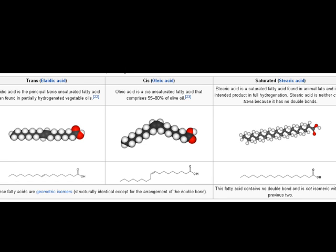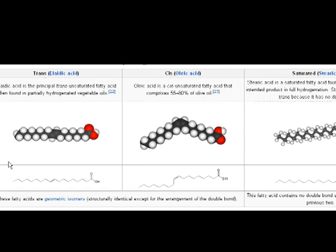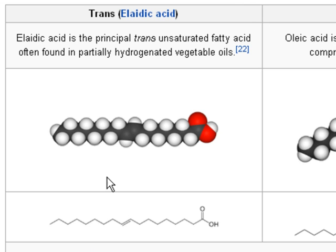Here are three general examples of fatty acids which can be used to make fats, such as a triglyceride. The first one is a trans fatty acid, which can make a trans fat. These are synthetically made. Trans fats do not occur in nature.